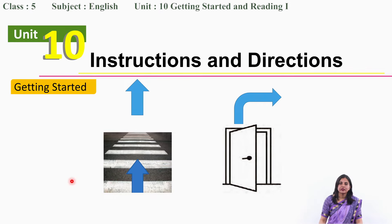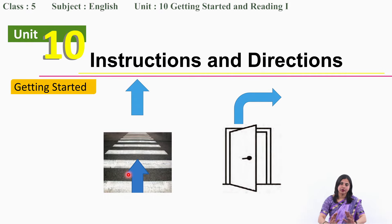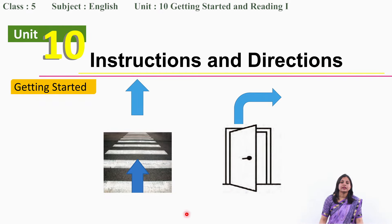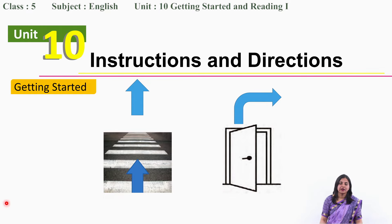You must look for the zebra crossing, look both sides, then only go from one side to another. You should follow the safety rules. So here is an arrow and here is the zebra crossing — what does it mean? The picture is trying to tell us: go straight along the zebra crossing. If you have to cross the road, go straight along the zebra crossing in the same direction. What about this — there is a gate. Either you can come inside or you can go outside.